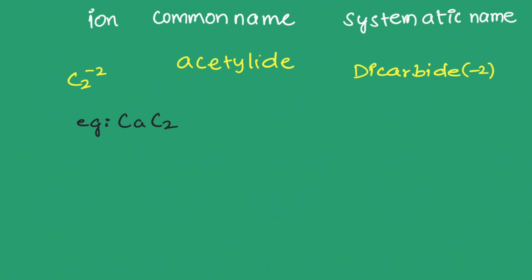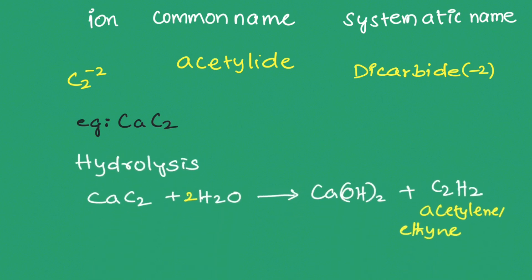The hydrolysis reaction of calcium carbide produces calcium hydroxide and acetylene. The common name is acetylene and the IUPAC name is ethyne.